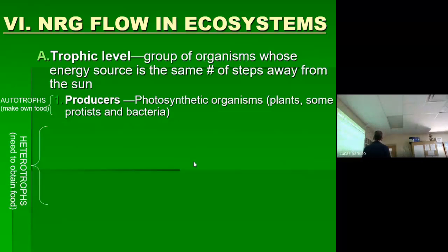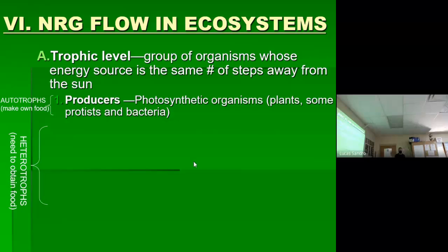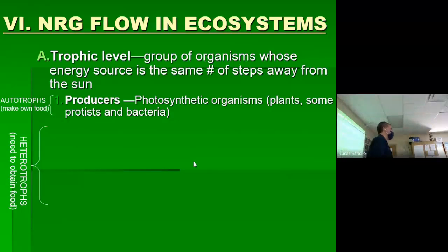We can classify plants as producers because they produce all the biomass for the ecosystem. We can also call them autotrophs because they are able to support themselves — they make their own food. The root 'troph' means to eat. Everybody else — write this down too — is a heterotroph. Autotrophs make their own food; heterotrophs have to eat other organisms, which is what 'hetero' means: other.